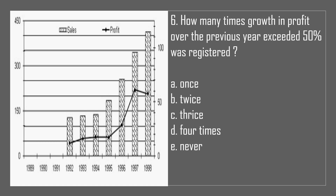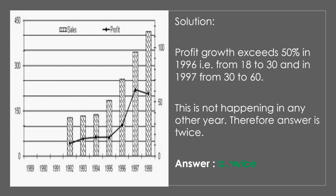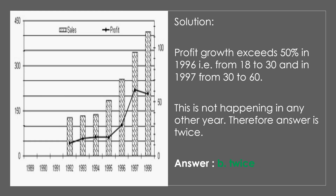Question 6. How many times was growth in profit over the previous year exceeding 50% registered? A. Once. B. Twice. C. Thrice. D. Four times. E. Never. The answer is B, twice. Solution: Profit growth exceeds 50% in 1996 (i.e., from 18 to 30) and in 1997 (from 30 to 60). This does not happen in any other year. Therefore the answer is twice.